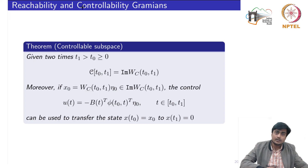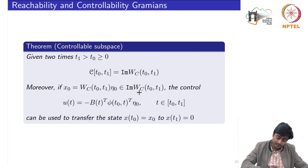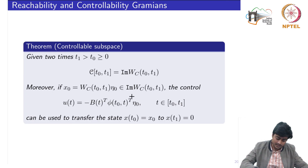Similarly, we can use the controllability Gramian to compute the controllable subspace. Given t1 > t0 ≥ 0, the controllable subspace is given by the image of the controllability Gramian W_C. Moreover, if x0 = W_C · η0, which is equivalent to x0 belonging to the image of W_C, then a specific control can be used to transfer the state from some non-zero initial condition to zero. The proof follows analogously to the reachability case. Once the Gramians are computed, the subspaces can be directly obtained.